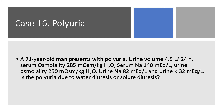Case 16 — we talked about this concept of polyuria. Let's discuss it again. A 71-year-old man presents with polyuria. Urine volume is very high, 4.5 liters. Serum osmolality is 285, serum sodium is normal at 140. Urine osmolality is 250, and urine sodium is high at 82. Urine potassium is 32. Is this polyuria due to water diuresis or solute diuresis?